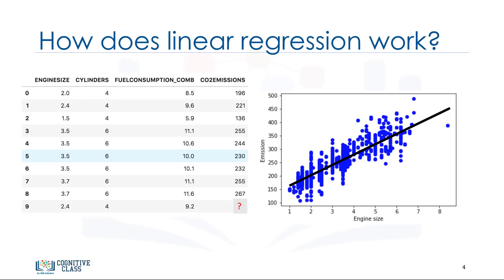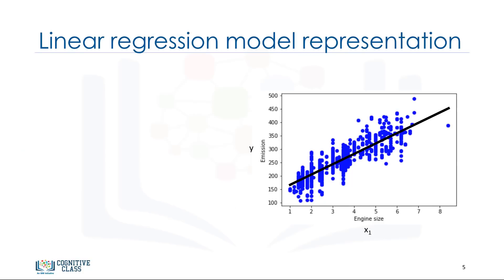With linear regression, you can fit a line through the data. For instance, as the engine size increases, so do the emissions. With linear regression, you can model the relationship of these variables. A good model can be used to predict what the approximate emission of each car is. How do we use this line for prediction now? Let us assume for a moment that the line is a good fit of the data. We can use it to predict the emission of an unknown car. For example, for a sample car with engine size 2.4, you can find the emission is 214.